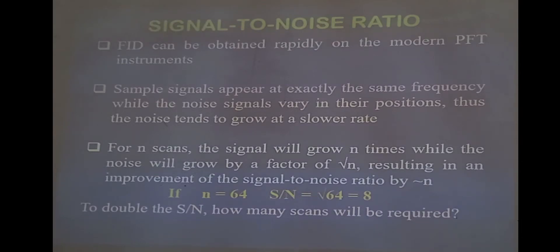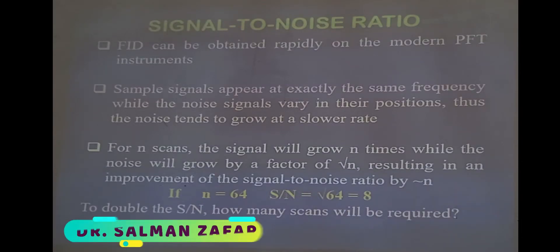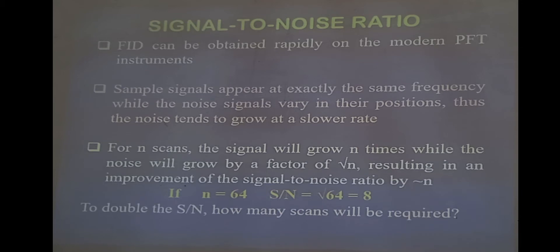In some spectra you might see a lot of noise. This noise may be because of certain factors. You need to have a very clear and clean spectrum so as to extract maximum information from it, and that is why your spectrum must have a good signal-to-noise ratio. Signal-to-noise ratio means the ratio of the intensity of the signal to the noise.